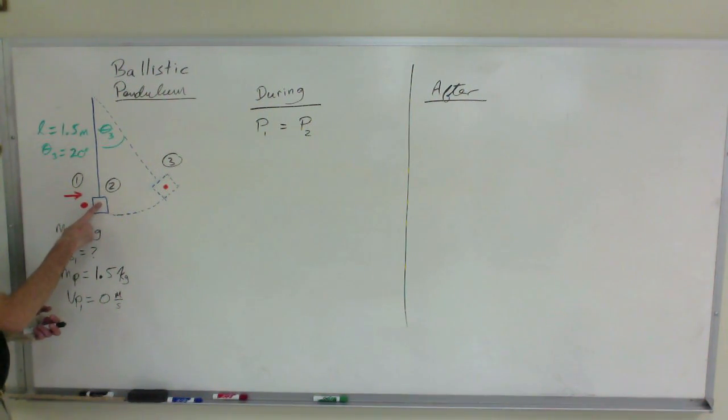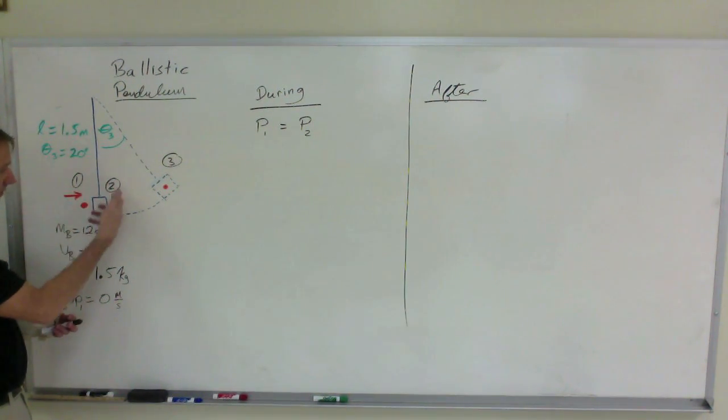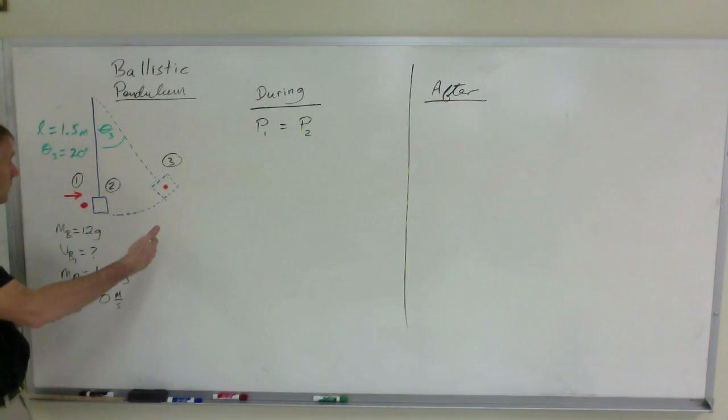Given that the pendulum here has a mass of 1.5 kilograms and it's initially at rest. The bullet has a mass of 12 grams and its velocity is what we're looking for. I'm going to label point one as being the point before the collision. Point two is after the collision but still at the bottom and then this will swing up after the collision to point three where it stops rising because it runs out of kinetic energy.